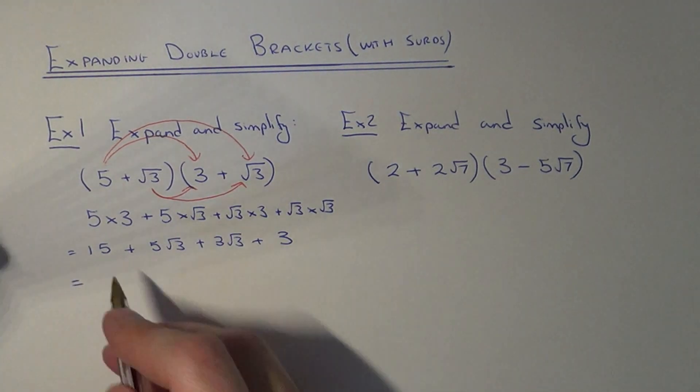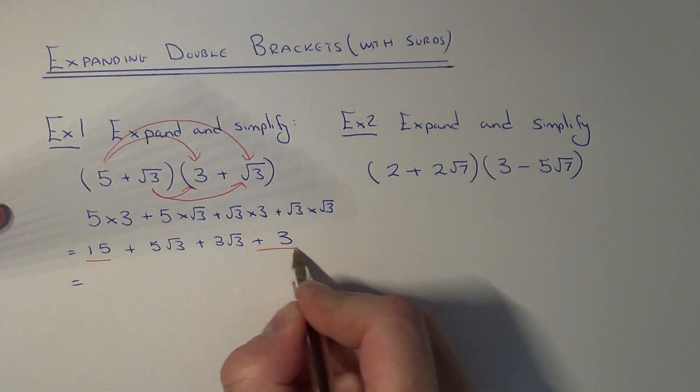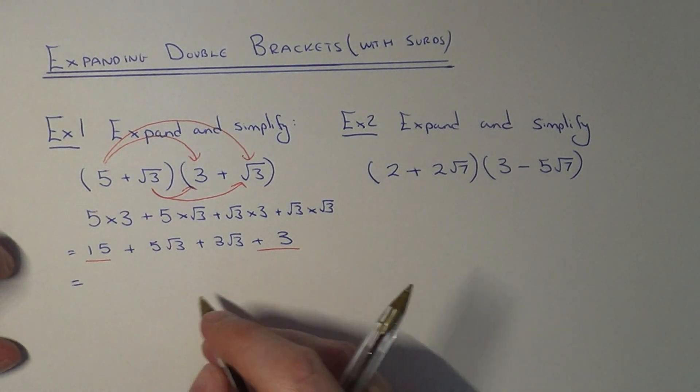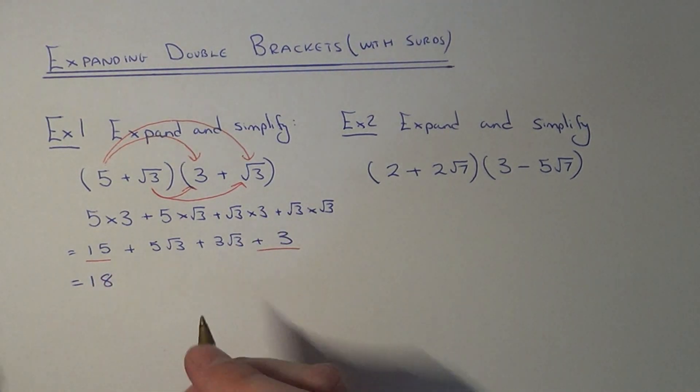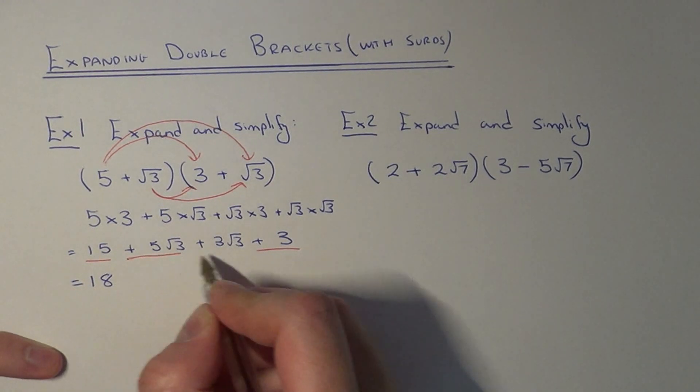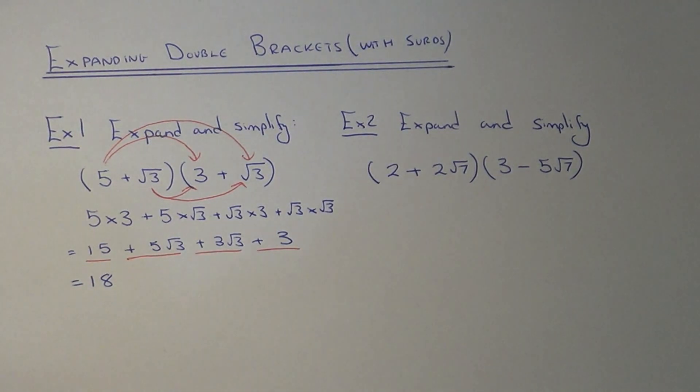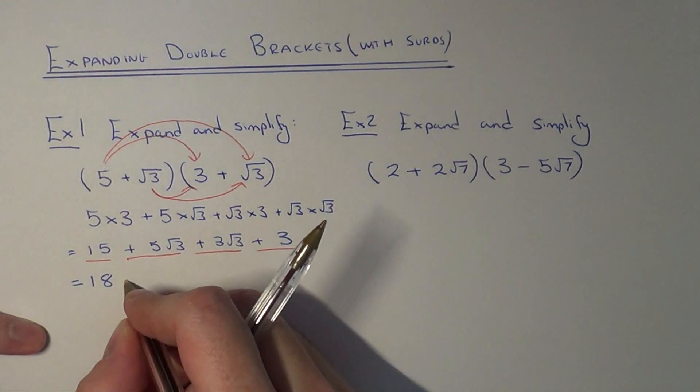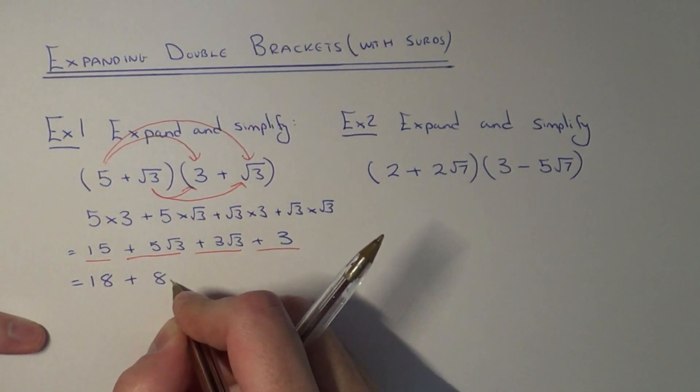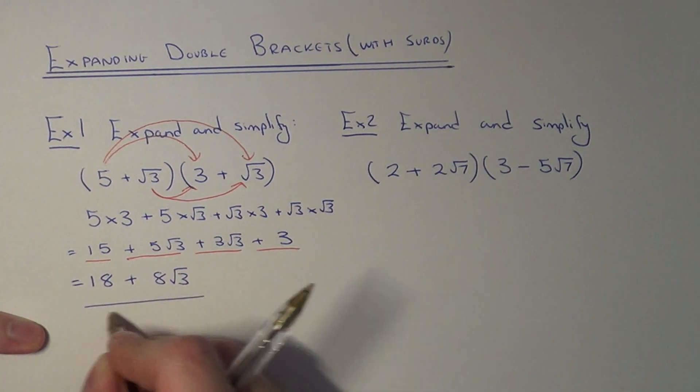So what we can do next is add together the integers. 15 plus 3 is 18. And we can also add together the surds in the middle. 5 root 3 plus 3 root 3 is 8 root 3.